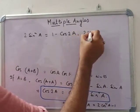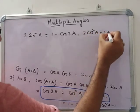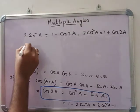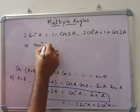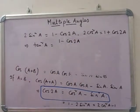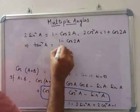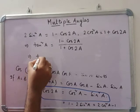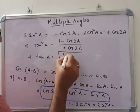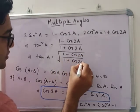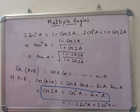From these we can derive that cos²A = (1 + cos 2A) / 2 and sin²A = (1 − cos 2A) / 2, so tan²A = (1 − cos 2A) / (1 + cos 2A). Similarly, tan A = √((1 − cos 2A) / (1 + cos 2A)). This is a very important result for derivations.